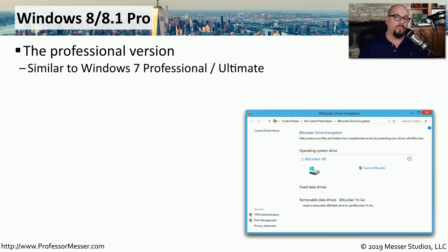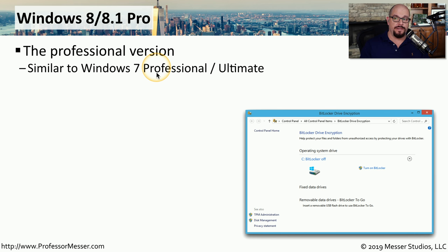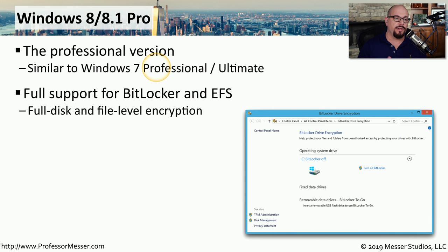The Pro Edition of Windows 8 or Windows 8.1 is the professional version, very similar to Windows 7 Professional or Windows 7 Ultimate. It has full support for BitLocker and EFS, so whether you need full disk encryption or single file encryption, you have that capability in the Pro Edition.